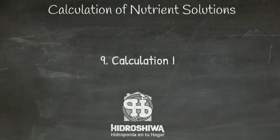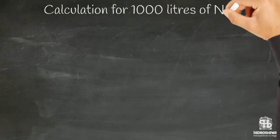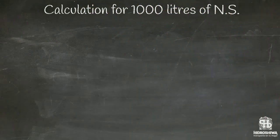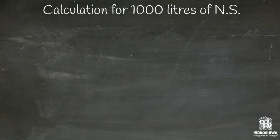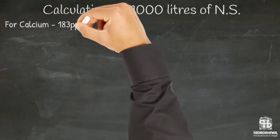This first calculation example is for a thousand liters of solution, simply to show the method. This is not an actual case since the water is considered demineralized and does not contain any element that we have to compensate for. In operations, we will base ourselves on Steiner's universal solution, and for the calculation we will use the simple rule of three and molecular weight.